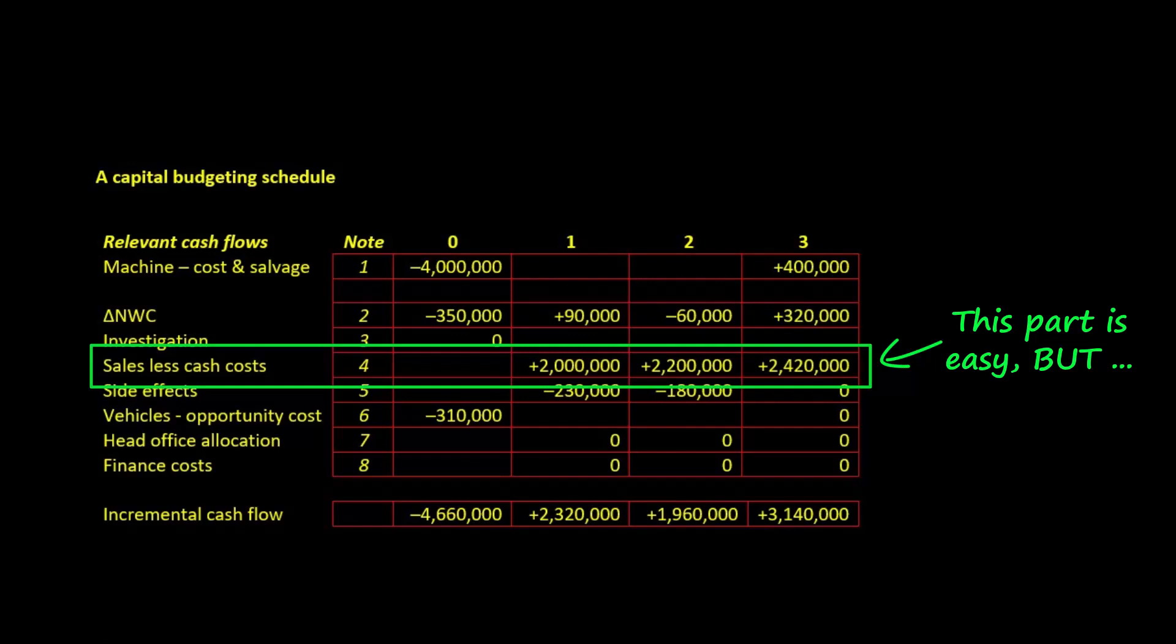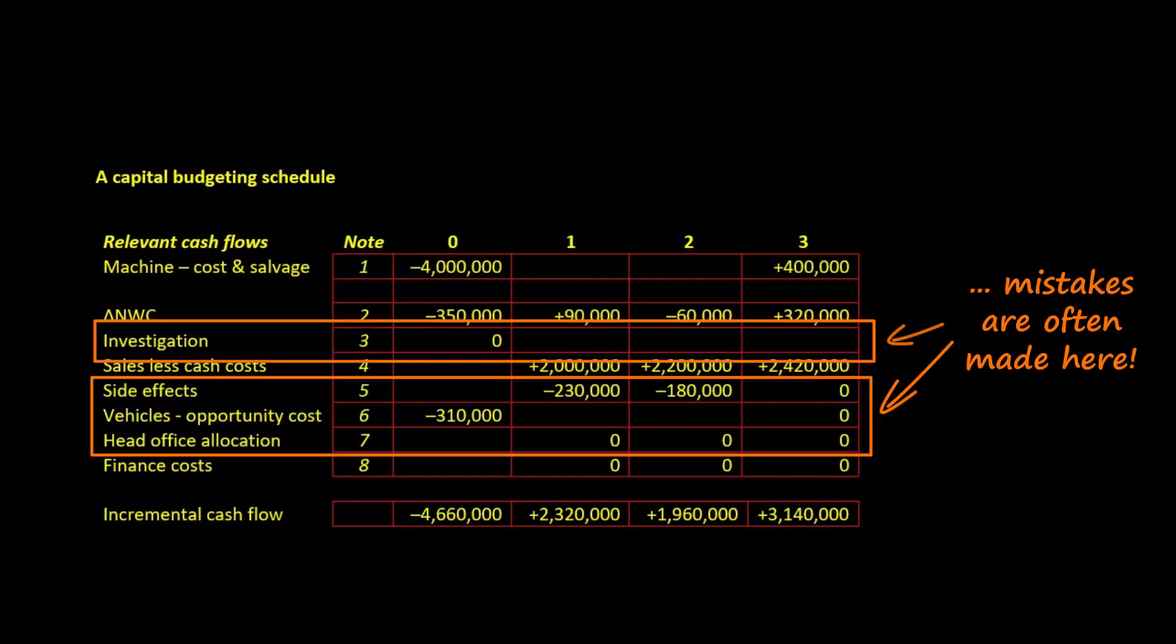But there are situations where things can get more complicated, such as sunk costs, opportunity costs, and positive or negative side effects. These have the potential to create a lot of confusion, which can be easily avoided if you follow the approach explained in this video.